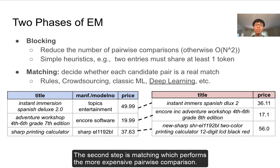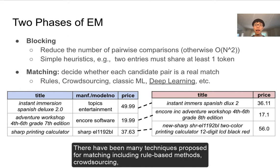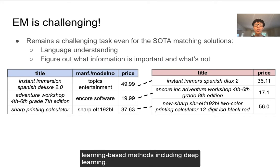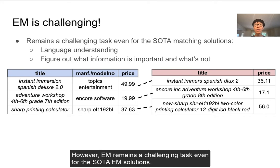The second step is matching, which performs the more expensive pairwise comparison. There have been many techniques proposed for matching including rule-based methods, crowdsourcing, and learning-based methods including deep learning. However, EM remains a challenging task even for the state-of-the-art EM solutions.